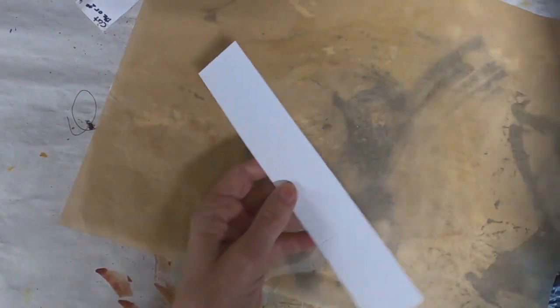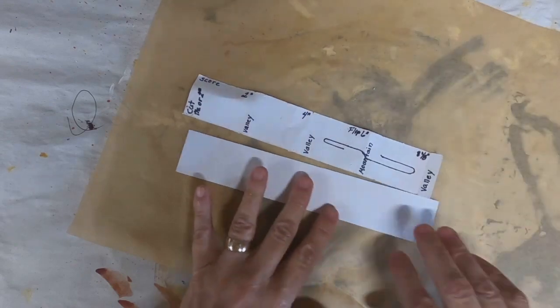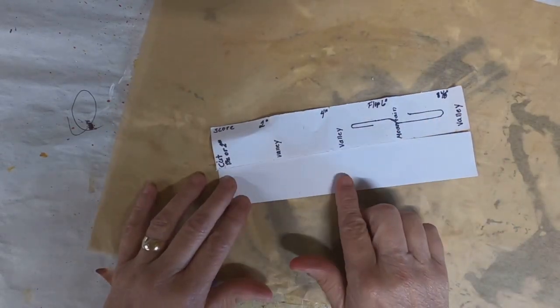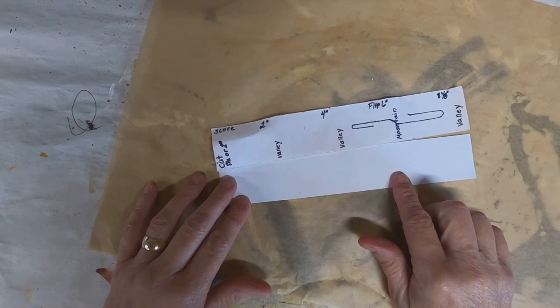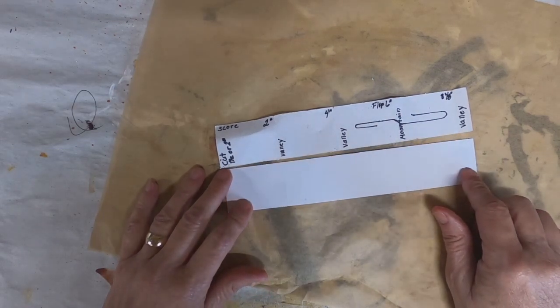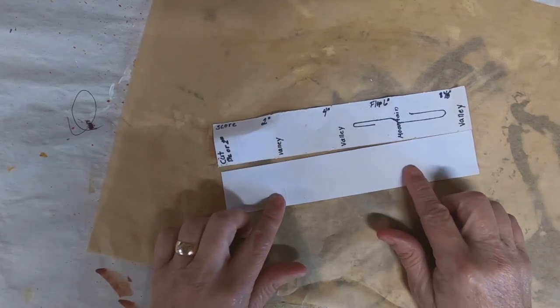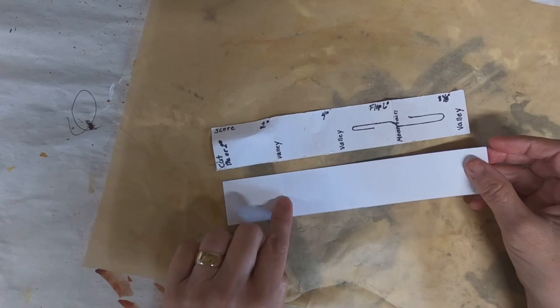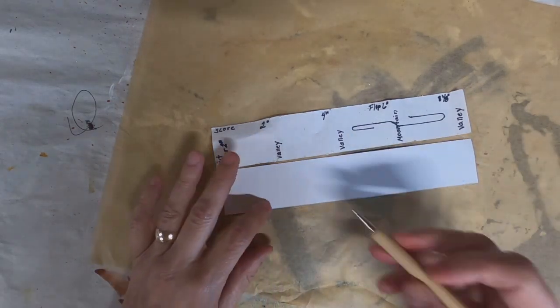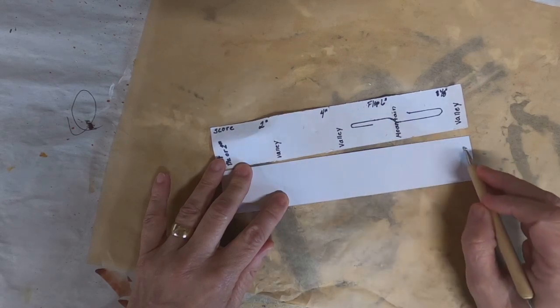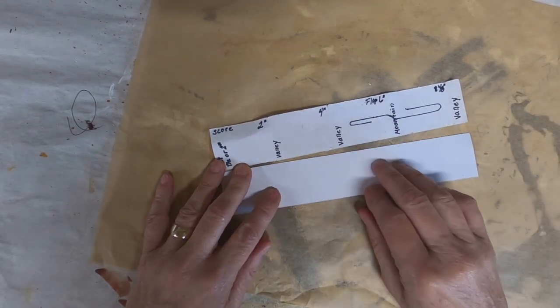Now I'm going to lay that down and for every valley, I'm going to fold that toward myself and the mountain, I'm going to fold away from myself. There's valley at two inches, the valley at four inches, and the valley at eight and one eighth.